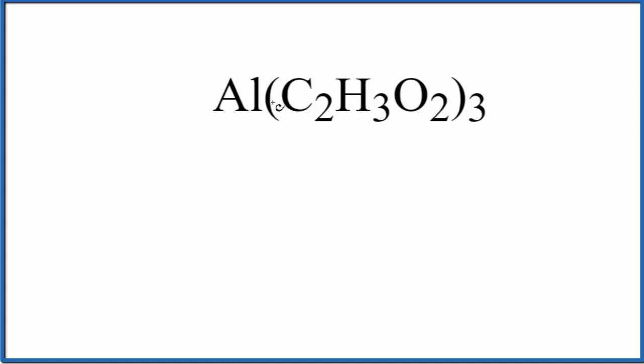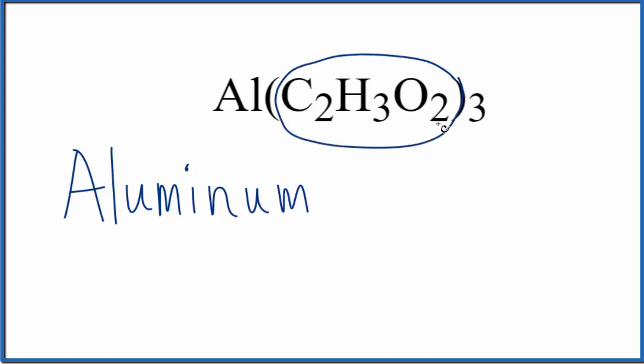So we first name Al as we find it on the periodic table, and that's just aluminum. Then we'll name the polyatomic ion, the C2H3O2. This is called the acetate ion, lowercase a, and you've either memorized that, or if you're allowed, you look it up on a table of polyatomic ions.